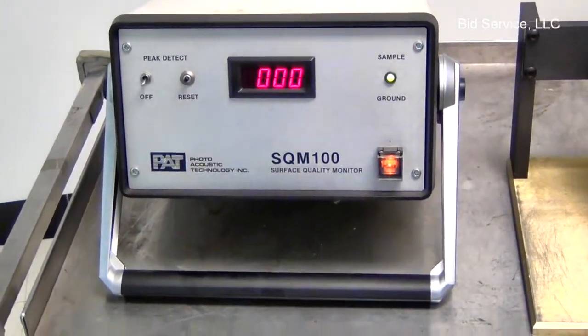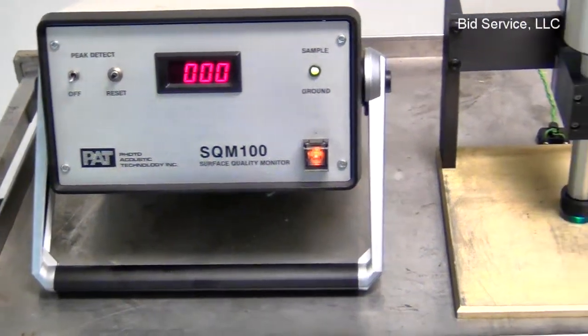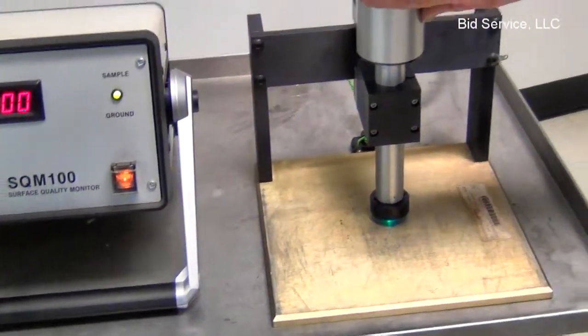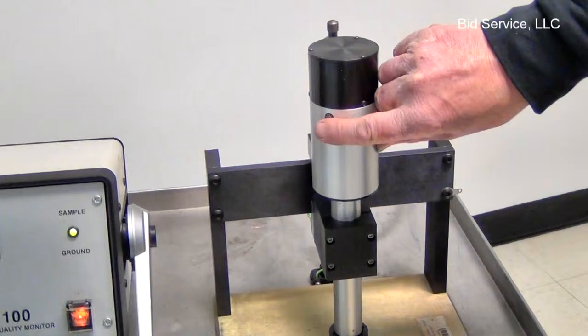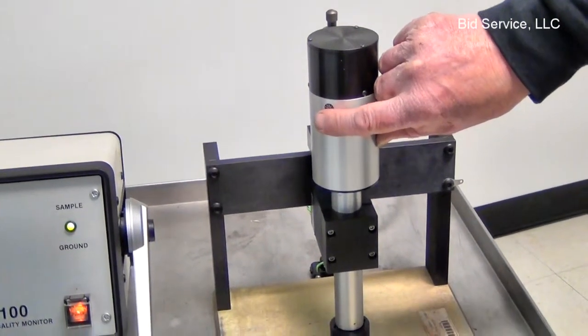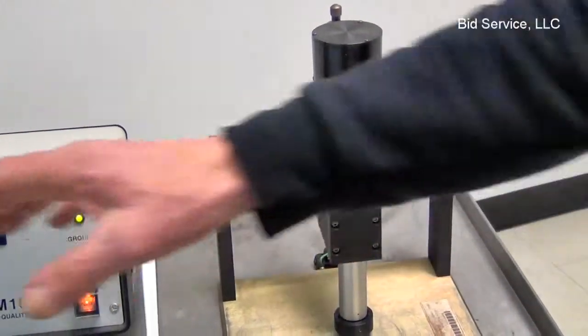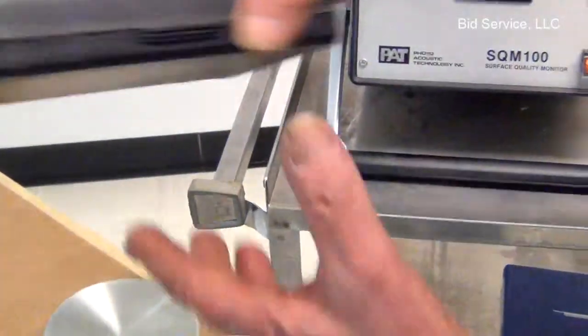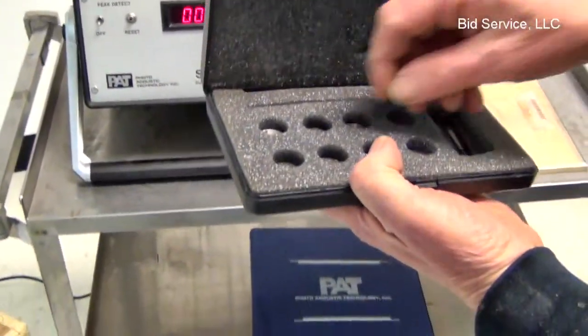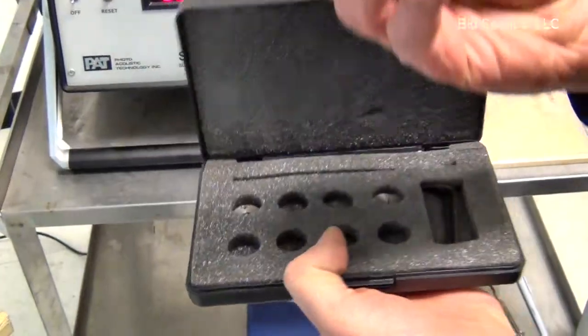Also, to aid in the accuracy of the measurement, there is a gain adjustment on the body of the sensor, along with a series of different sized apertures that can be installed for different applications.